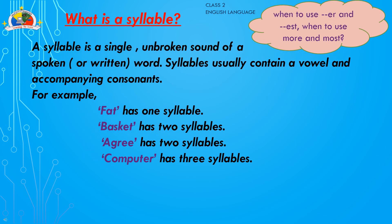Now, how do we know when to use '-er' and '-est' versus 'more' and 'most'? All of these are based on syllables. A syllable is a single unbroken sound of a spoken or written word. Syllables usually contain a vowel and accompanying consonants. For example, 'fat' has one syllable, 'basket' has two syllables (bas-ket), 'agree' has two syllables (a-gree), and 'computer' has three syllables (com-pu-ter). The number of times you hear a vowel sound is the number of syllables in a word.